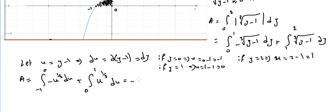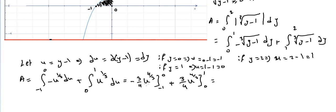The antiderivative of u^(1/3) is (3/4)u^(4/3). Evaluating: the first integral gives −[(3/4)(0) − (3/4)(−1)^(4/3)] = 3/4. The second integral gives (3/4)(1)^(4/3) − 0 = 3/4. Adding them: 3/4 + 3/4 = 6/4 = 3/2. The final answer is 3/2.